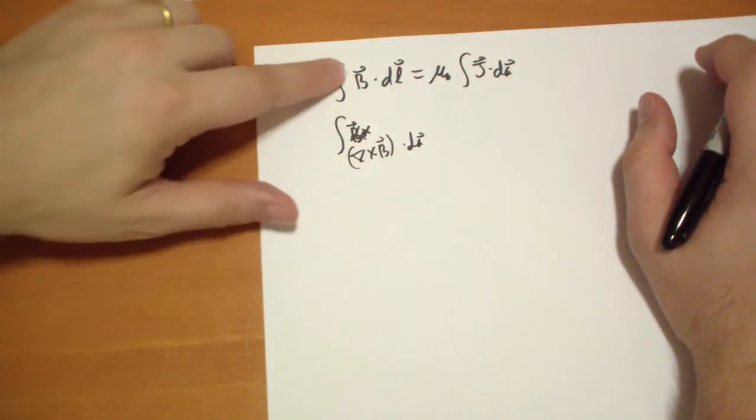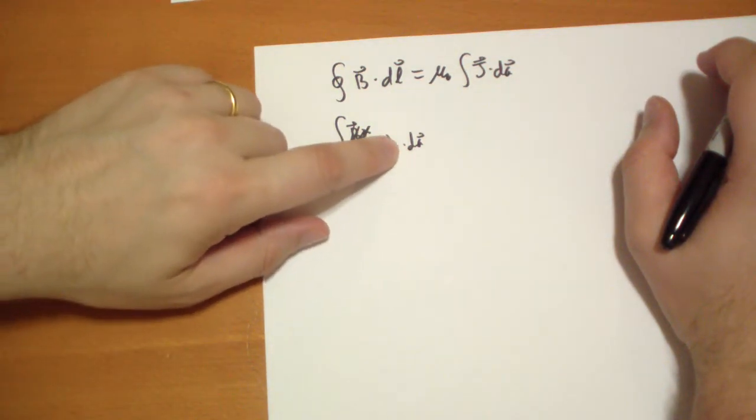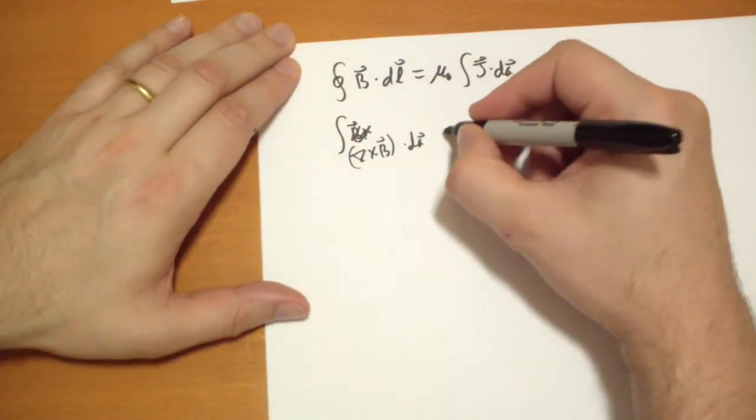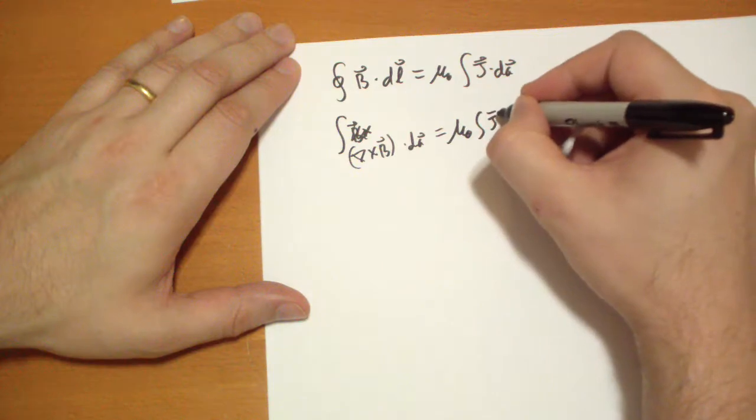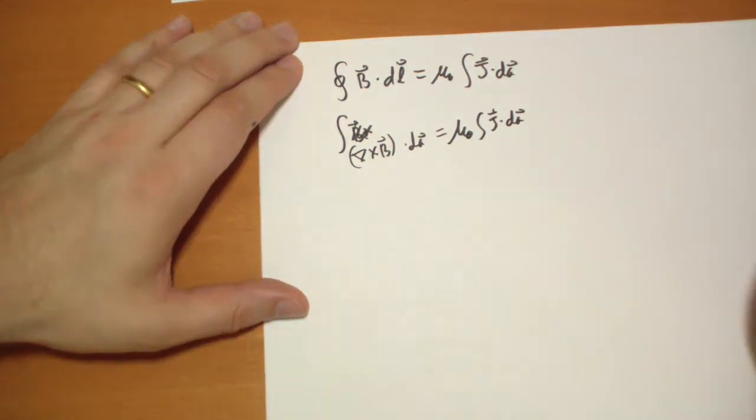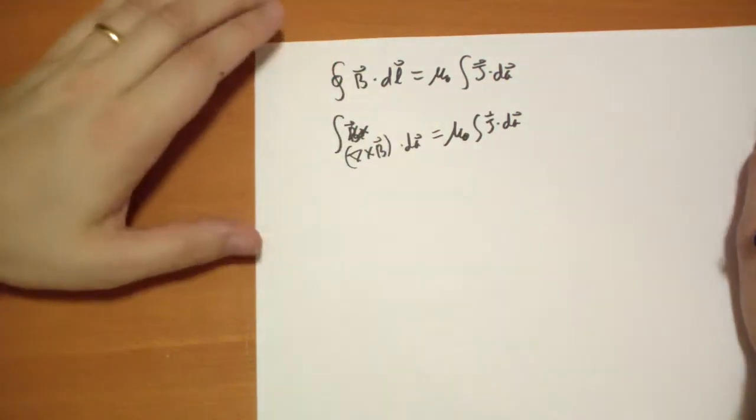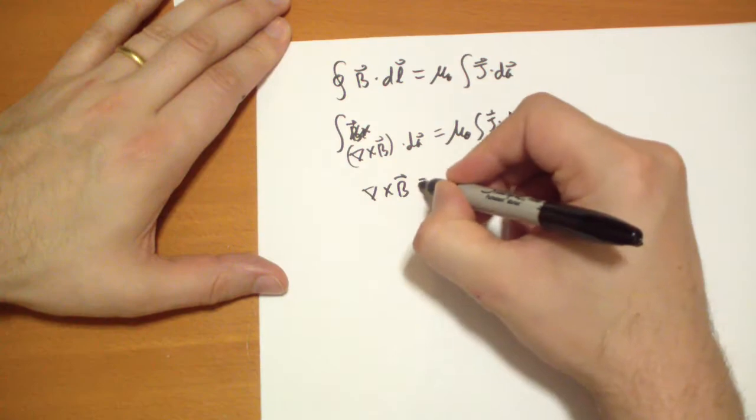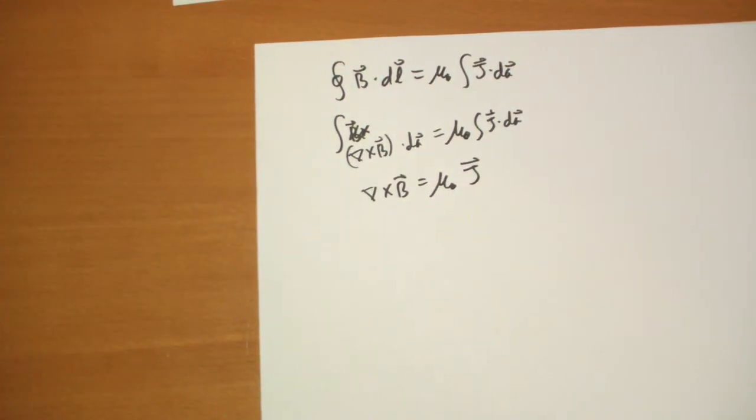So you take the surface that's bounded by this loop and you take the curl of B in all different points and you dot that with the A vector of that surface. Doesn't matter which surface you choose, you're going to get the same answer according to Stokes' theorem. That's equal to μ₀ integral J vector dot dA vector. Which tells us that this and that must be equal. So we have the curl of B general rule here is μ₀ J vector.